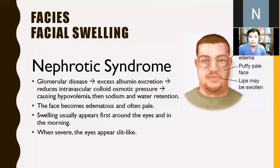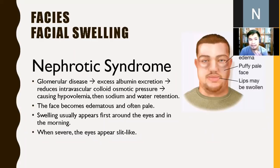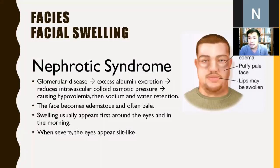In nephrotic syndrome, glomerular disease causes excess albumin excretion, decreasing intravascular colloid osmotic pressure and causing hypovolemia. This leads to sodium and water retention, making the face edematous, often pale and swollen — and if severe, the eyes appear slit-like due to the swelling.